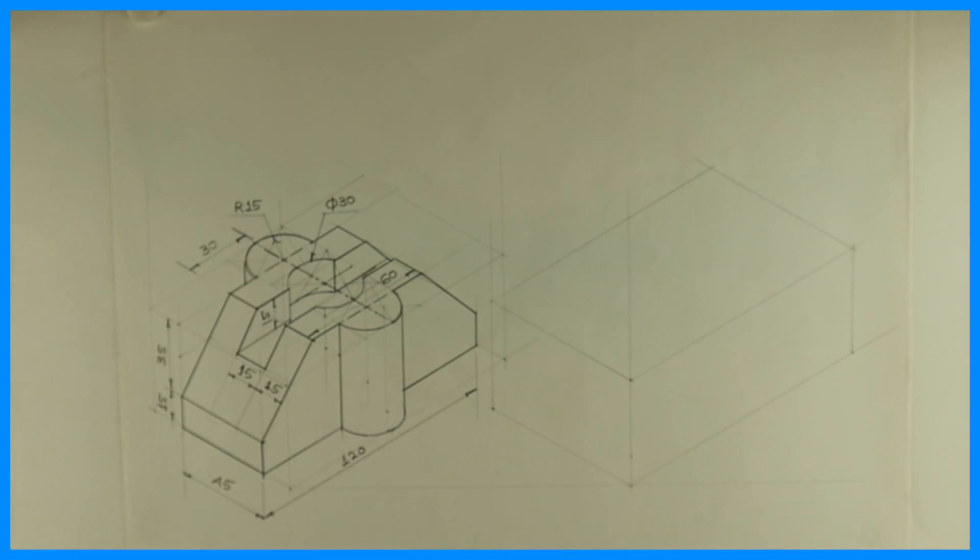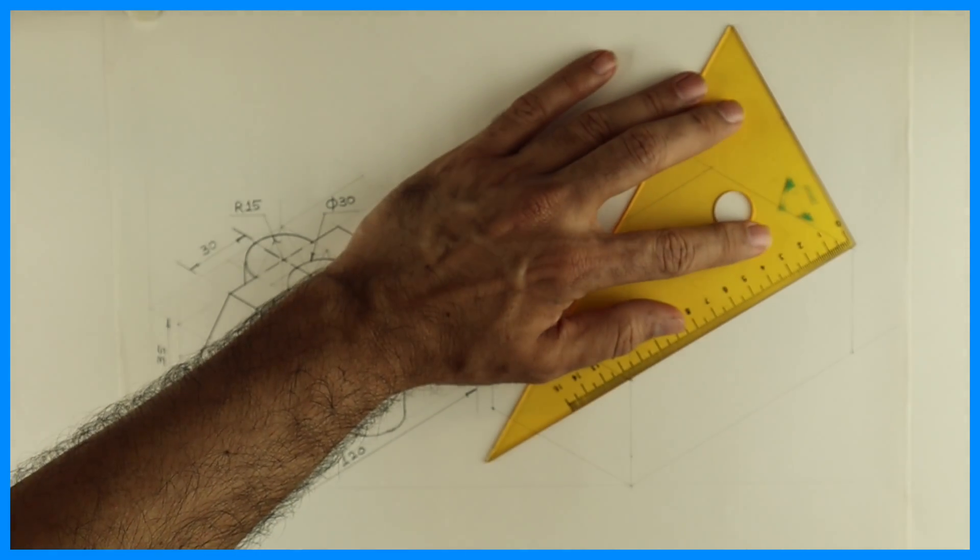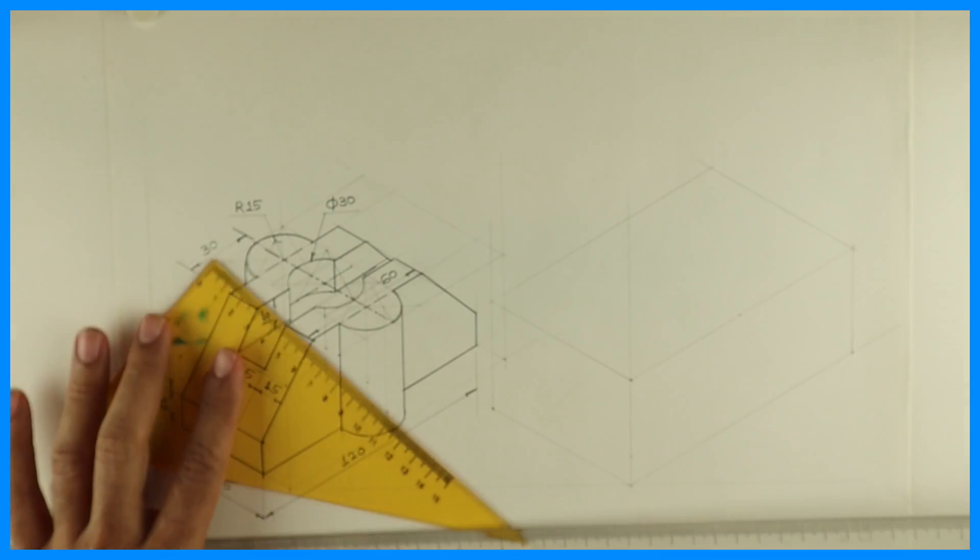Right, so we'll draw this box. We'll start with top view. We'll take half of 120 which is 60 and we'll draw center line.